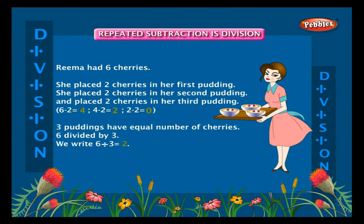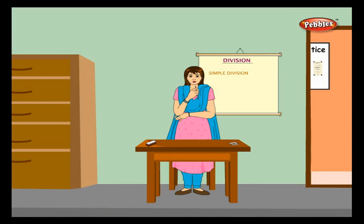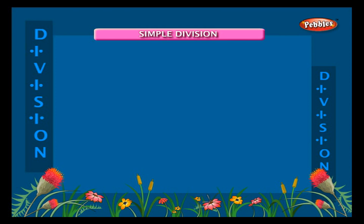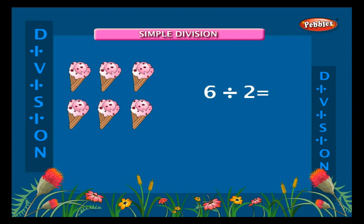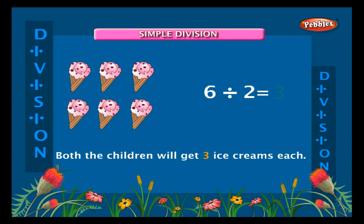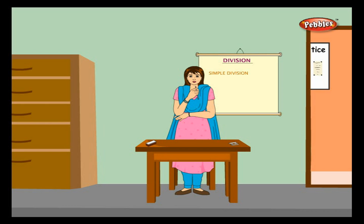Simple division: what would you do when you have to share six ice creams equally among two children? You should divide them among the two children. Six divided by two is equal to three — that is, both children will get three ice creams each.